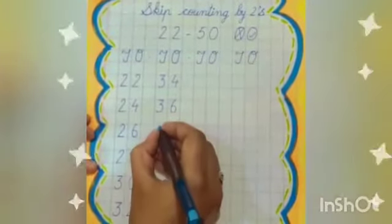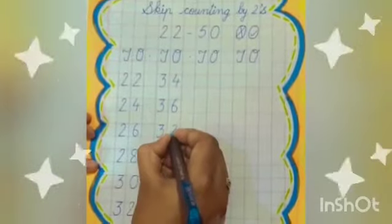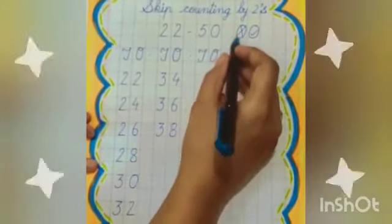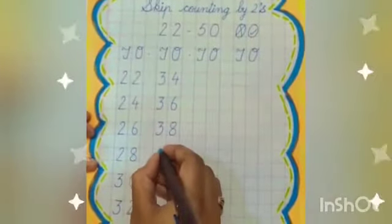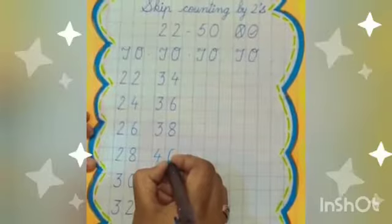37, 38. So we will write 38. Now 38, 39, 40. So we will write 40.